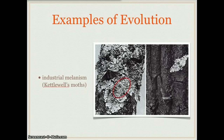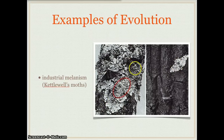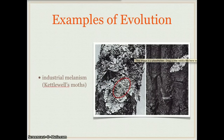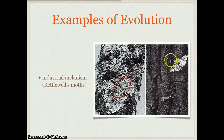Another example of evolution is industrial melanism — a term that describes how human activity can affect evolution through pollution. A famous example is peppered moths, studied by Kettlewell. In London around the Industrial Revolution, there were white-and-black peppered moths living on white-and-black trees. They were hard to see, so birds couldn't eat them easily, meaning there were many white-and-black moths and fewer totally black moths. When the Industrial Revolution occurred, soot covered the tree trunks, making the trees darker. Now it was harder to see the black moth and easier to see the white moth, so birds ate the white moths more often.